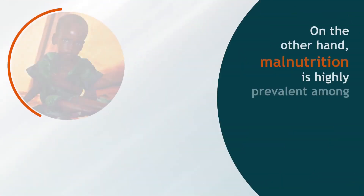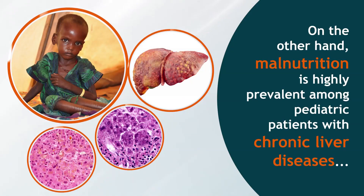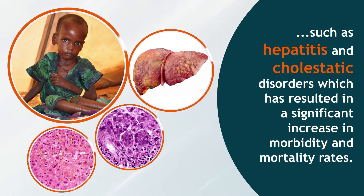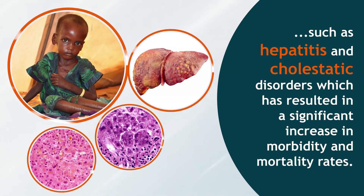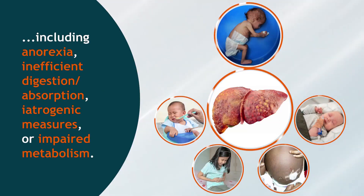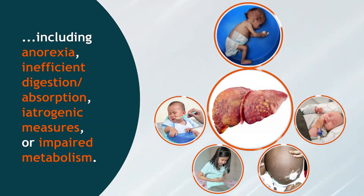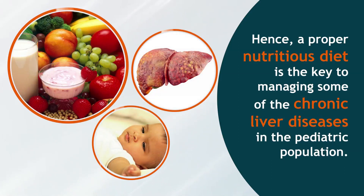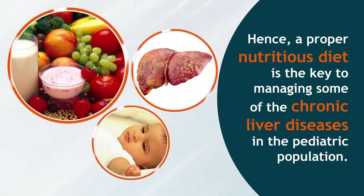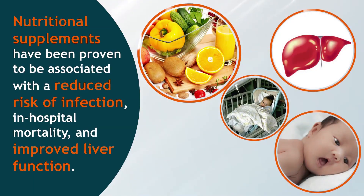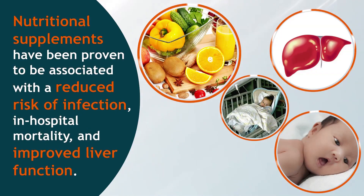Present management of NAFLD focuses on modification of diet and exercise, ideally with weight reduction or suppression of weight velocity in overweight patients. Malnutrition is highly prevalent among pediatric patients with chronic liver diseases such as hepatitis and cholestatic disorders, resulting in significant increases in morbidity and mortality. Contributing factors include anorexia, inefficient digestion or absorption, iatrogenic measures, and impaired metabolism. Nutritional supplements have been proven to reduce risk of infection, in-hospital mortality, and improve liver function.